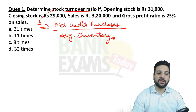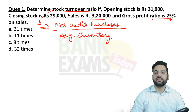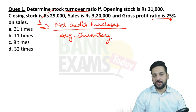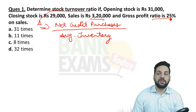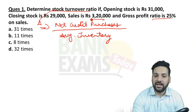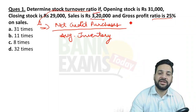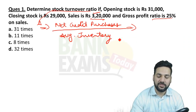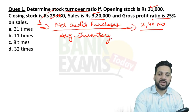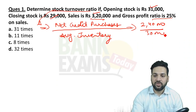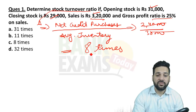Sales is 3,20,000 and gross profit is 20%, so we assume all figures are credit. Net credit purchases are 75% of 3,20,000, which equals 2,40,000. Average inventory is (31,000 + 29,000) / 2 = 30,000. So the stock turnover ratio is 2,40,000 divided by 30,000, which is 8 times. Very easy!